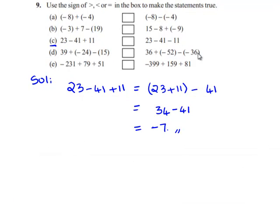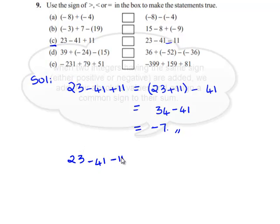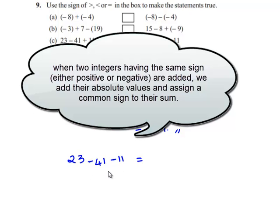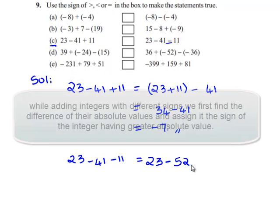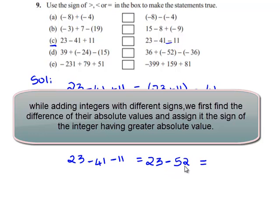We will note down the values on the right hand side, that is 23 minus 41 minus 11. We will add up the values having a positive sign, that is 23, and then add up the values having a negative sign, that is 41 and 11. 41 plus 11 is 52, and this becomes 23 minus 52. So 23 minus 52 gives minus 29.